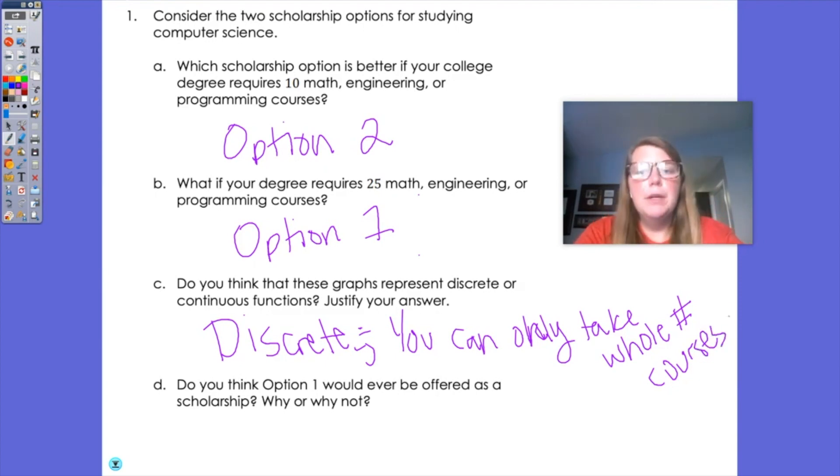Your output obviously could be a decimal because we're dealing with money, but your input is the reason why it's discrete. Do you think option one would ever be offered as a scholarship? Probably not because I would assume anyone that would attend this school would take that option and they would be giving out a lot of money if people chose to do that.